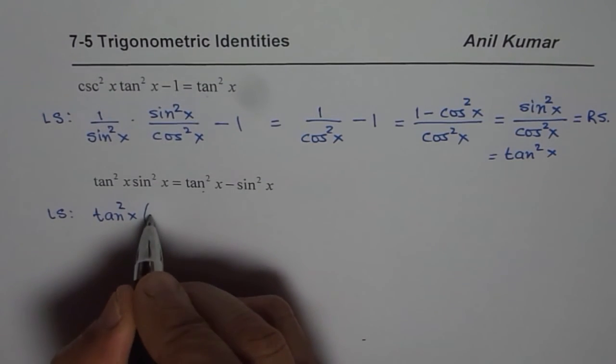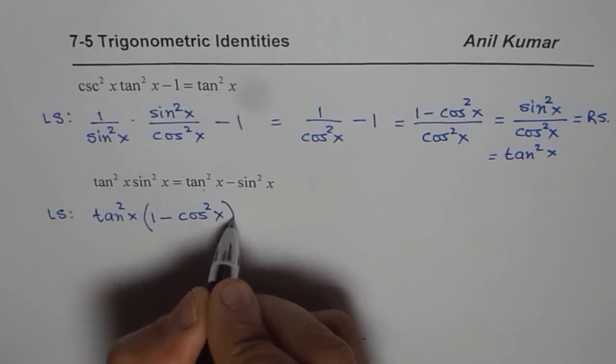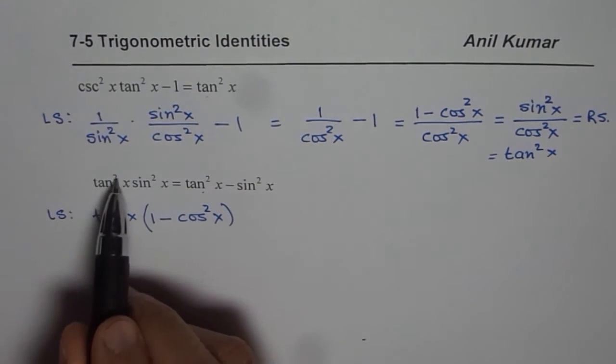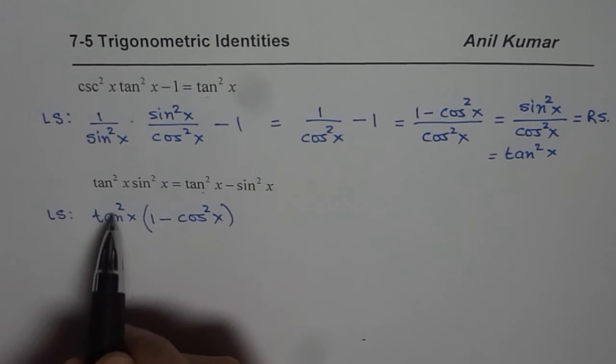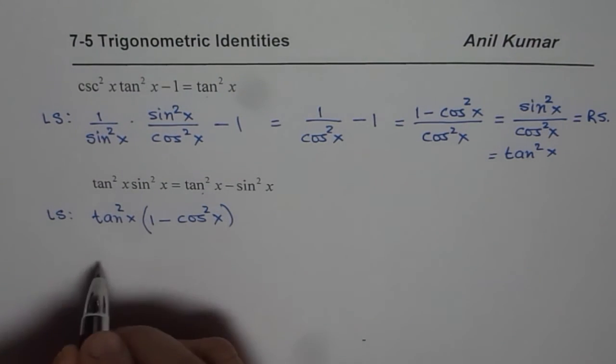Now sin square x could be written as 1 minus cos square x. Correct? So we wrote tan square x sin square x as tan square x times 1 minus cos square x. Now let us open this bracket.